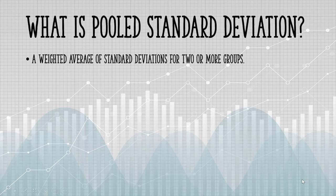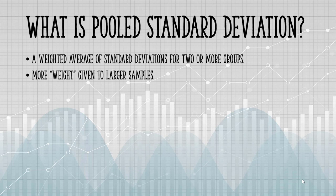The pooled standard deviation is a weighted average of standard deviations for two or more groups. The individual standard deviations are averaged with more weight being given to larger sample sizes.